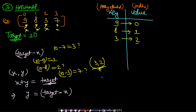The time complexity of the hash map approach is O(n), since we iterate through the array once, and each search and insert operation on the hash map is assumed to be O(1). So the overall time complexity is O(n).